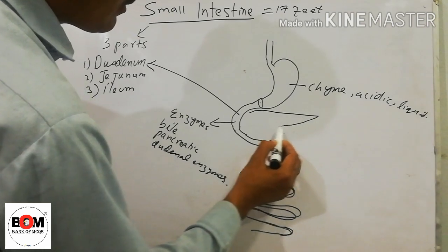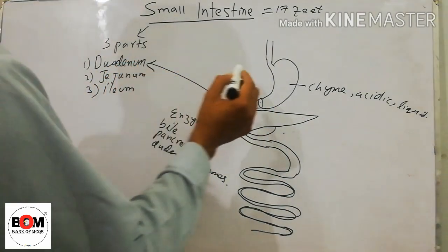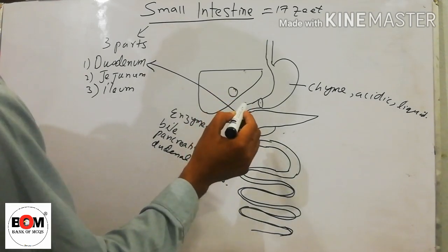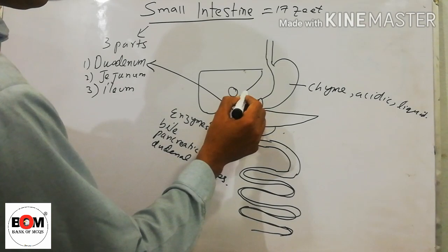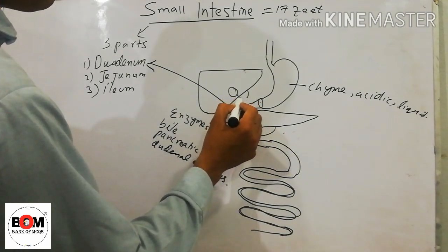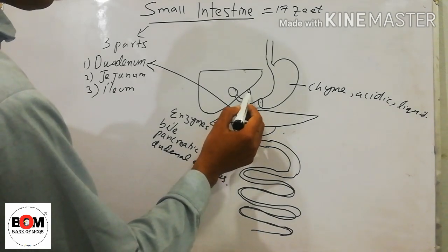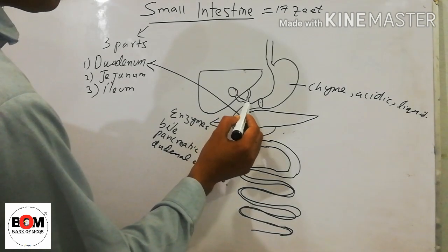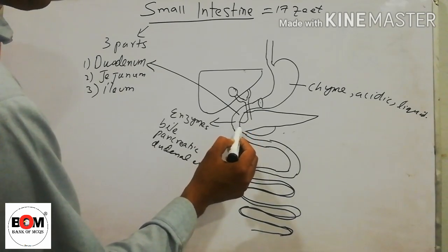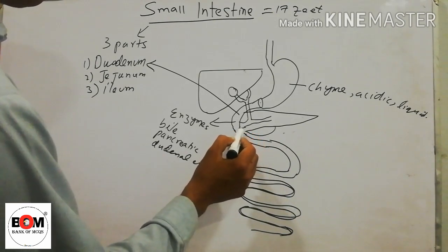The pancreas lies here, the liver lies here, and here is the gallbladder. The liver and the gallbladder are attached to each other through a duct. The duct from the liver and the gallbladder meet to form the common bile duct, which opens into the duodenum. The pancreatic duct also opens into the duodenum.